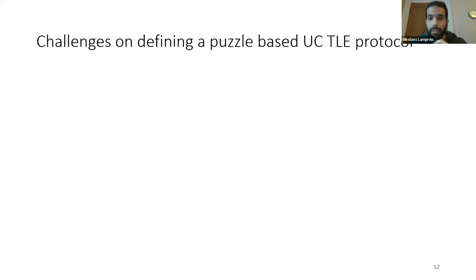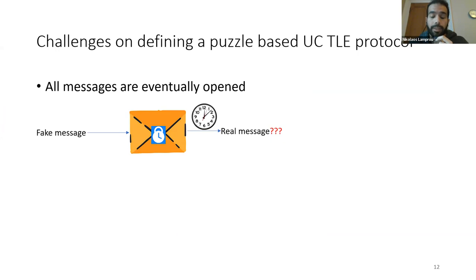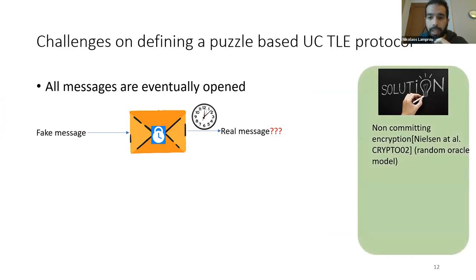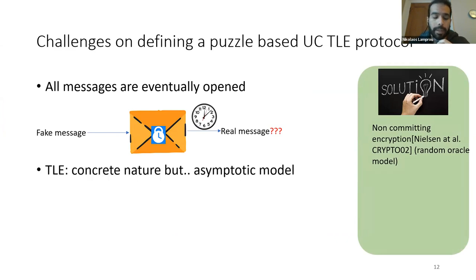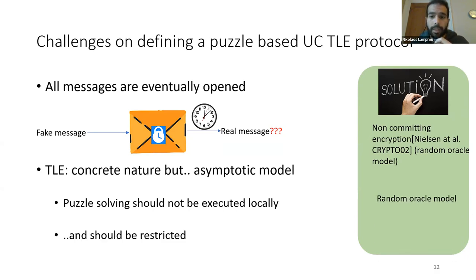There were challenges in defining a puzzle-based UC-TLE protocol. The first is that all messages in time-lock encryption are eventually opened, so a simulator must encrypt a fake message and after a specific time equivocate that message and open it to the real one — the solution is to use non-committing encryption in the random oracle model. The second problem is that TLE has a concrete nature but we need to study it in the UC framework where the model is asymptotic, so puzzle solving should not be executed locally — instead we use an oracle — and access to this oracle should be restricted, for which we introduce a functionality wrapper as in similar works.